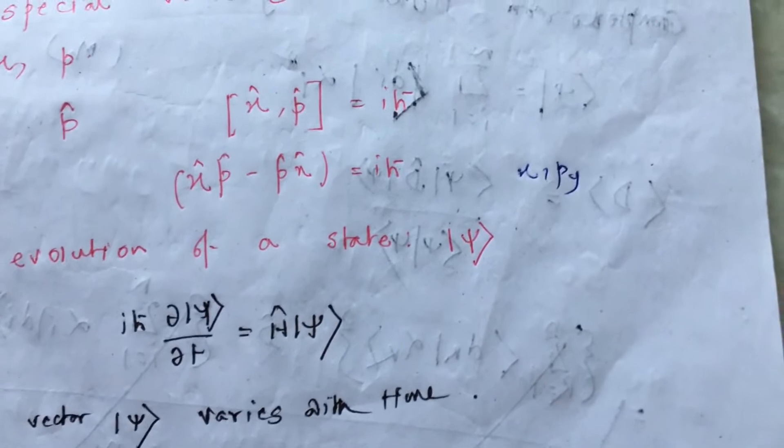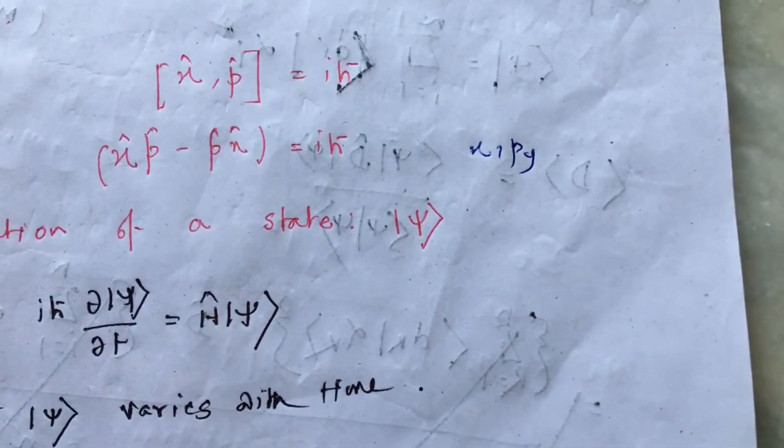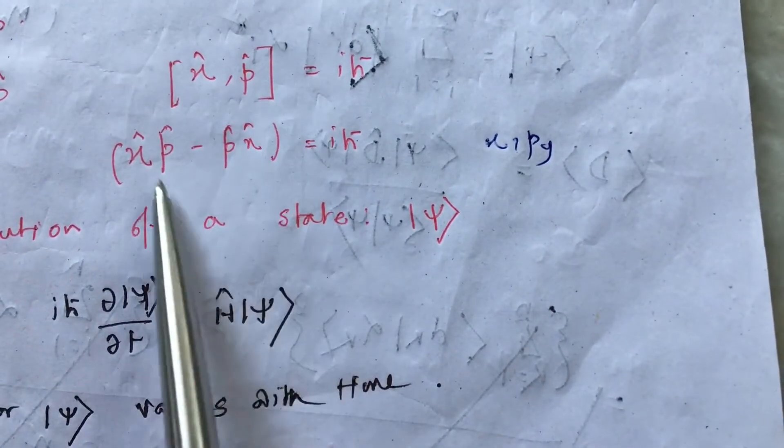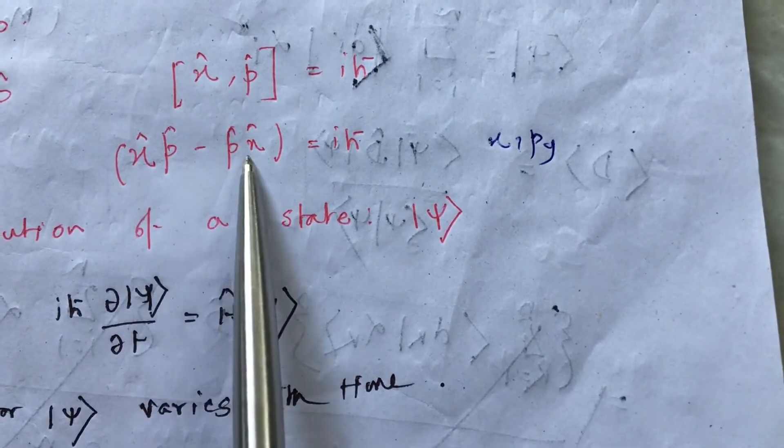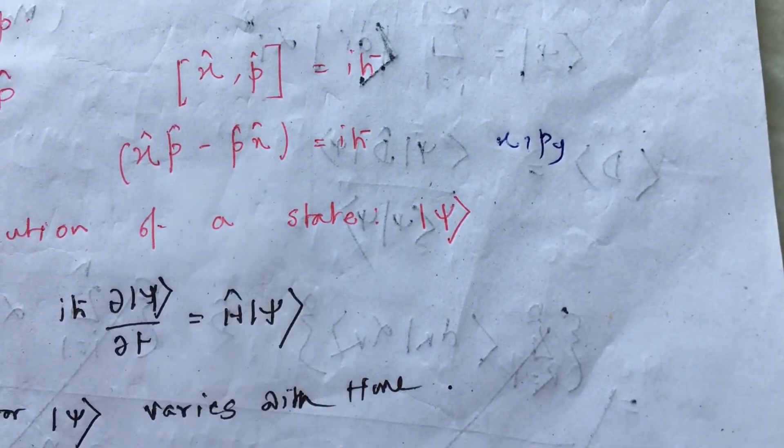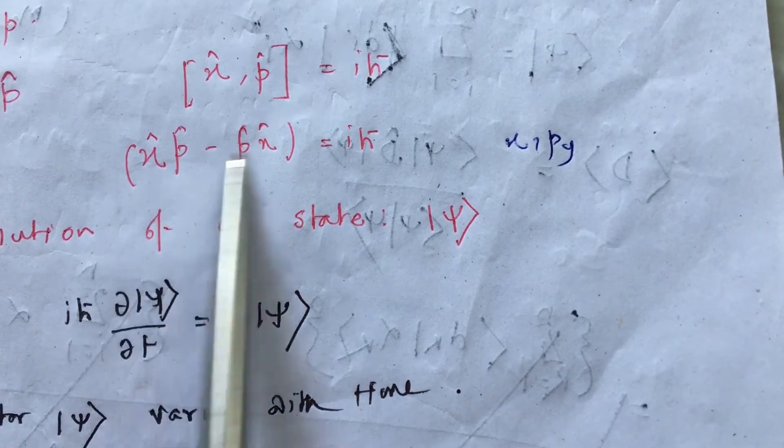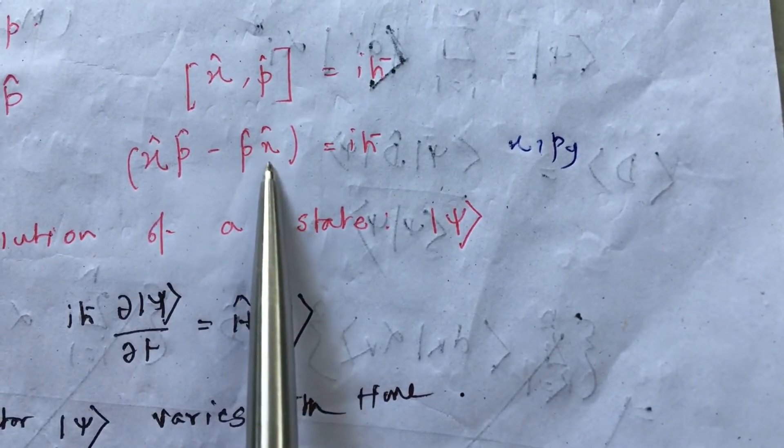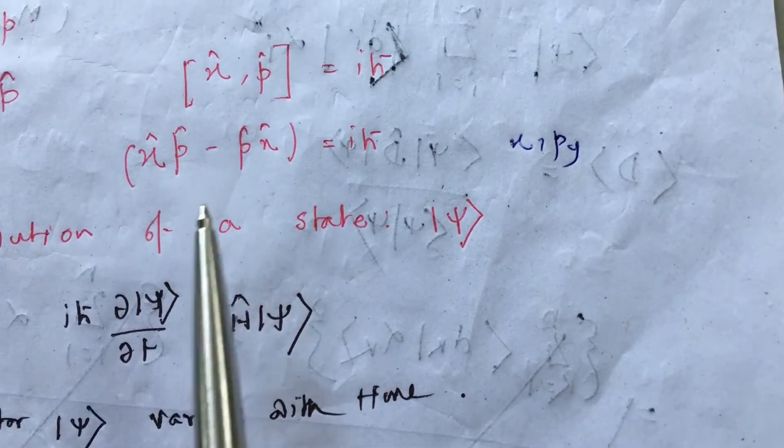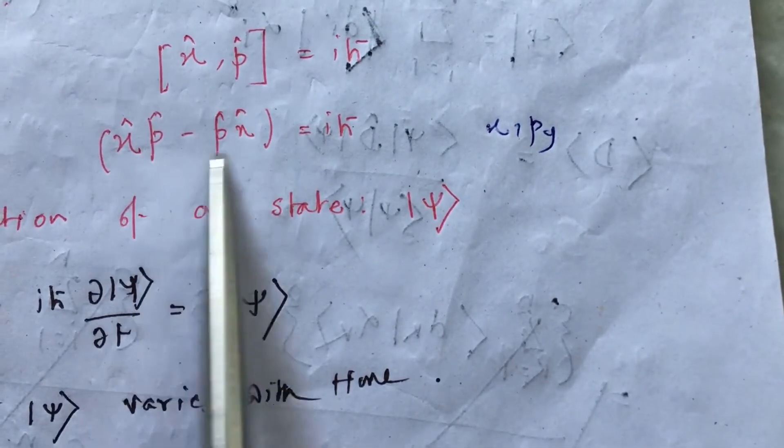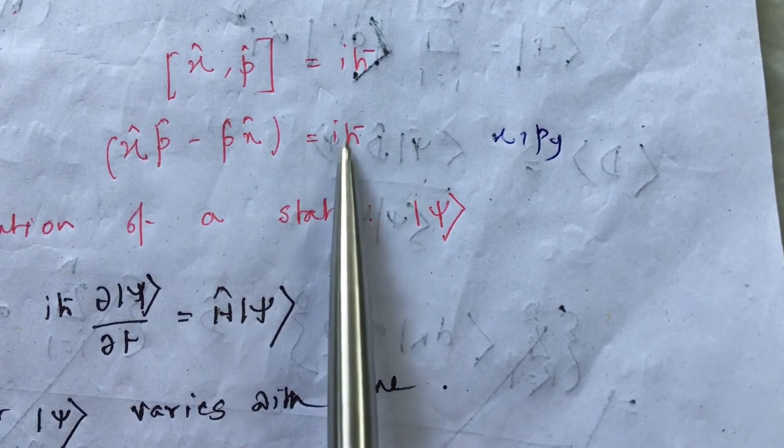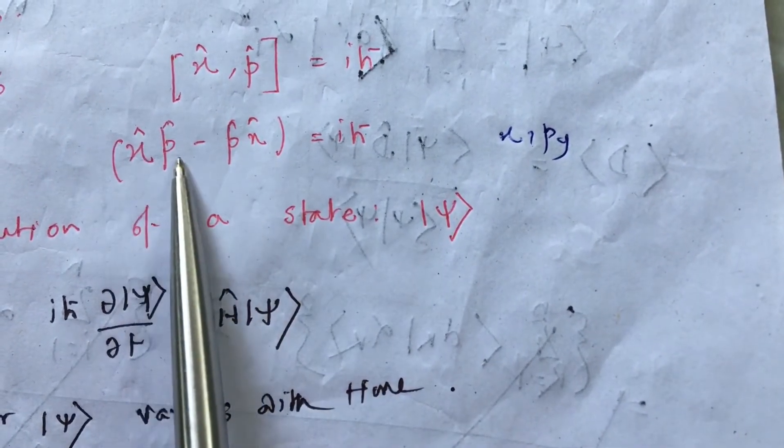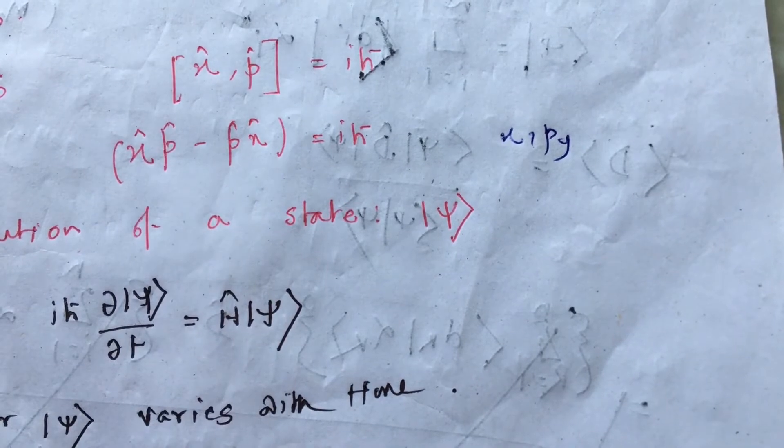And what's so special about them is their commutation relation, which looks like this: xp minus px. As these are operators, ordering is important. This is not like xp and this is also xp. We can't write like that. And this relation is not equal to 0, which means that we can't measure x and p, that is, position and momentum at the same time.